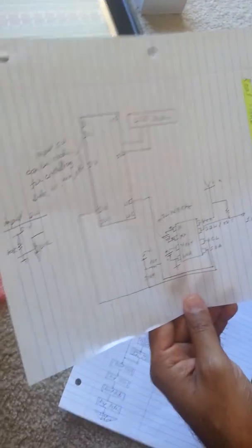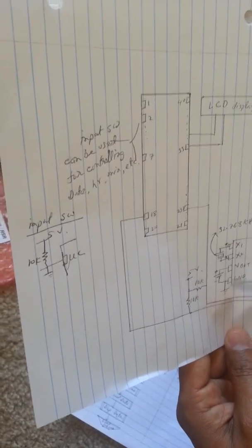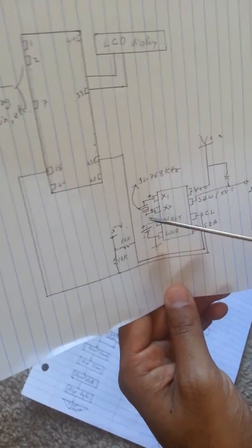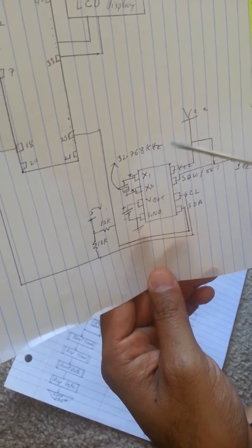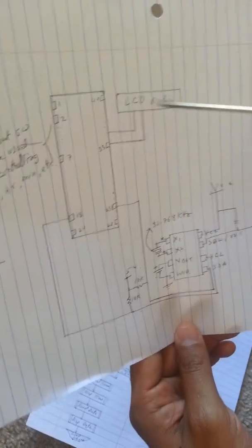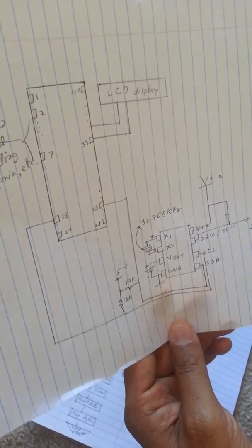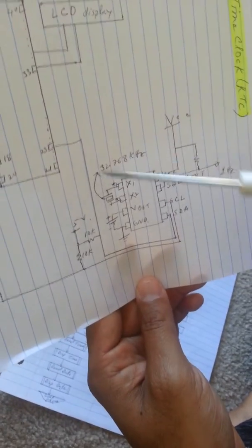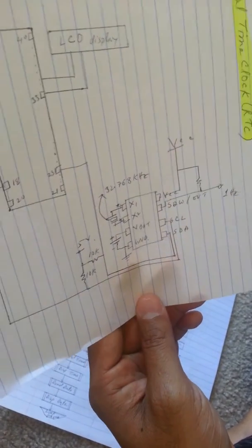This is my microcontroller and this is my RTC. Here is the crystal, 32.768 kilohertz. I made it a little bit simple, I did not draw everything here, but you can look at this. There are two lines connected from microcontroller to this RTC.